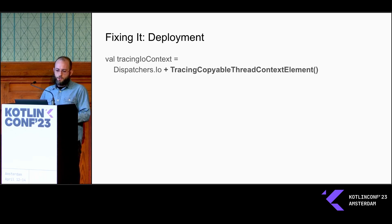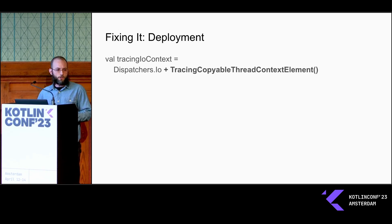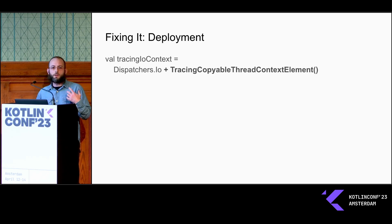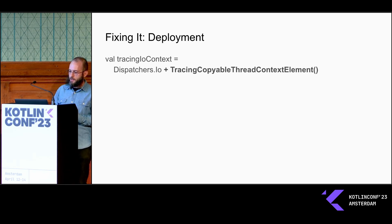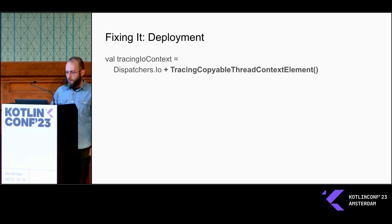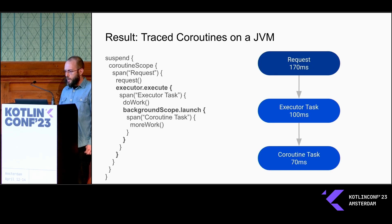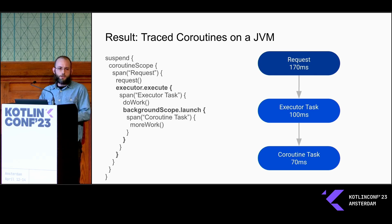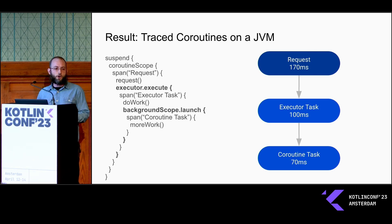Deploying this mechanism is relatively straightforward. If you have global dispatchers or global coroutine contexts in your program, you can add a context element into these, and it will propagate out from your global contexts into anything that starts on those contexts — child contexts and so on. The CopyableThreadContextElement will propagate through this and handle all of the memory correctly. This is also a useful technique for deploying some other things for interacting with the coroutine machinery under the hood.